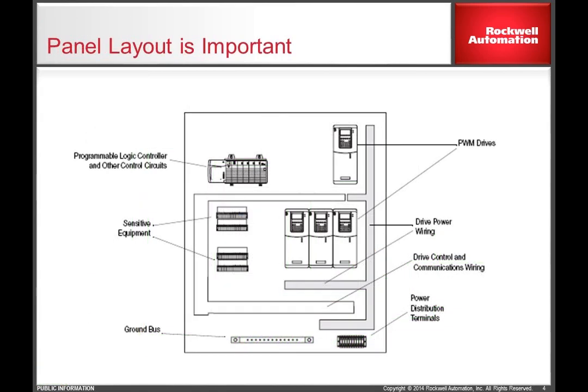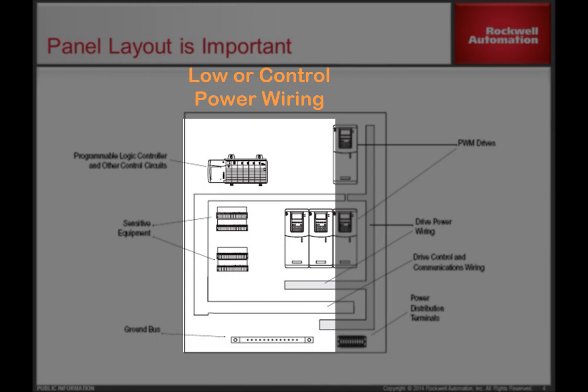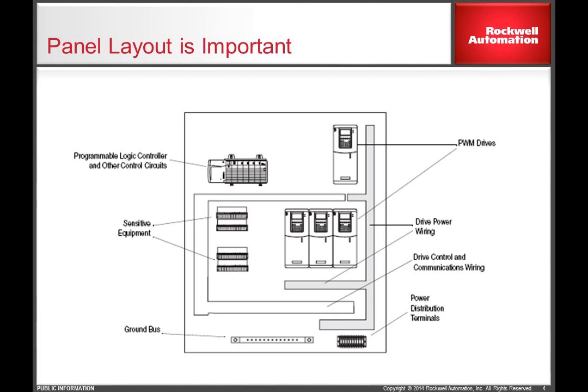Once the drive has been installed with all of the proper grounding considerations, proper panel layout needs to be considered. Always follow proper spacing requirements as stated in the installation or user manual to allow for proper airflow and cooling. A good layout plan starts by putting all the power input and output wire entry on the same side of the panel and placing sensitive equipment on the other side of the panel. The panel layout shown allows common mode noise current to flow away from sensitive electronic equipment and help prevent electromagnetic interference issues.